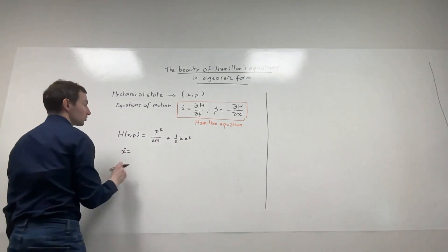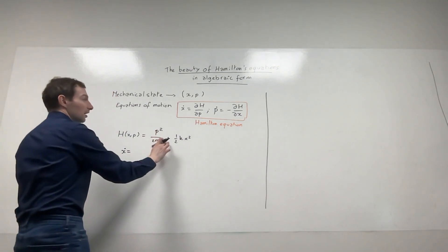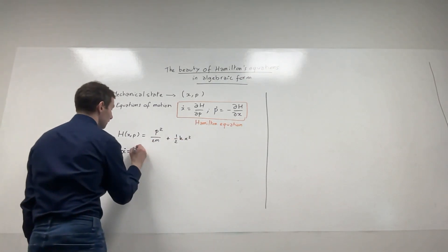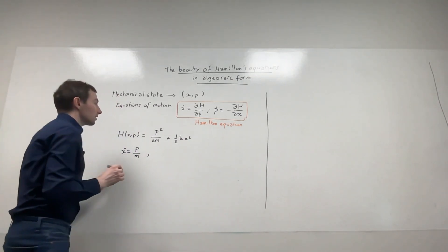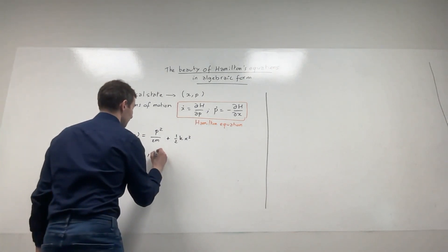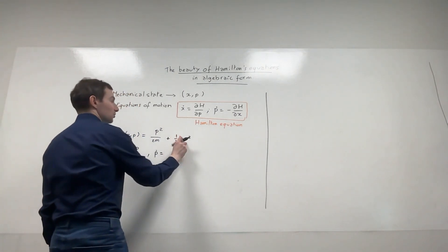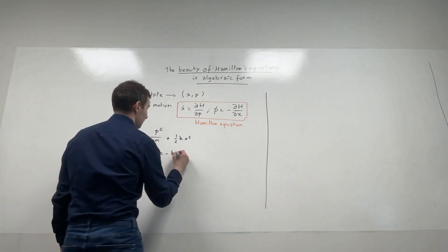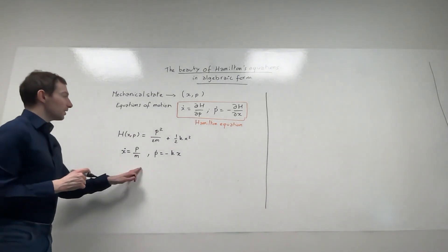X-dot is the partial derivative of H with respect to P. The K X squared term doesn't contribute, so we get P over M. Then P-dot, differentiating with respect to X, gives minus K X.